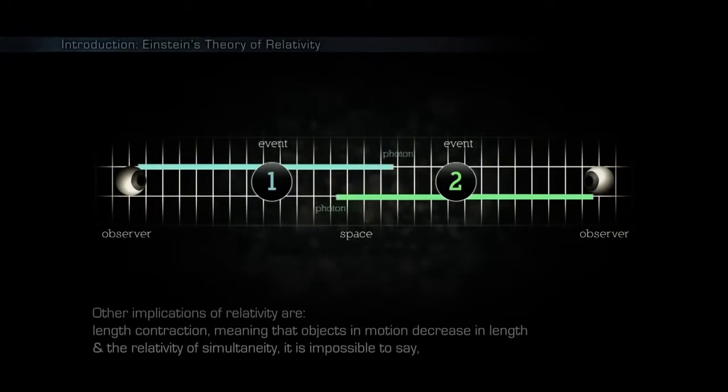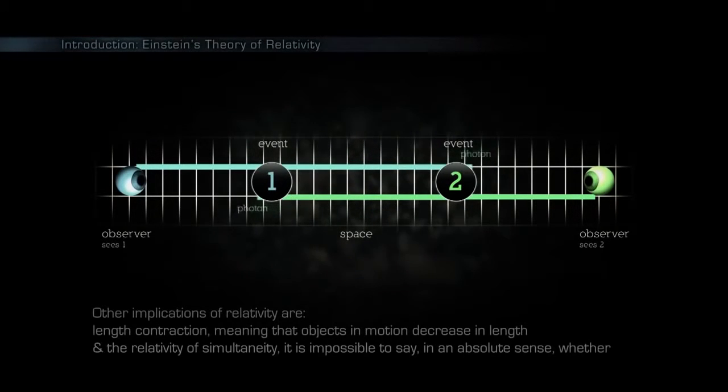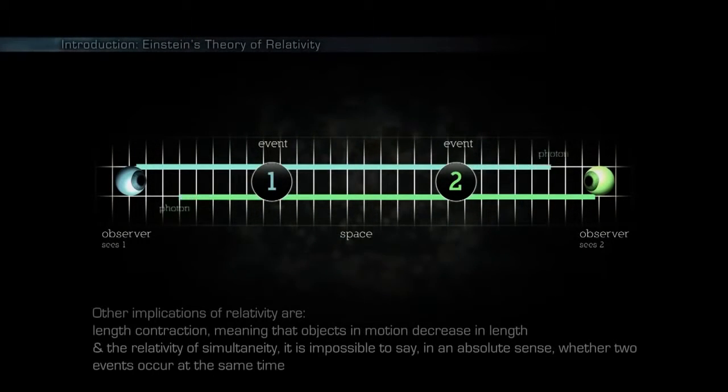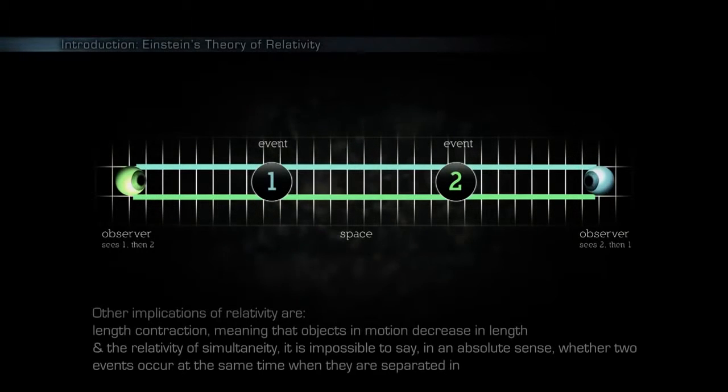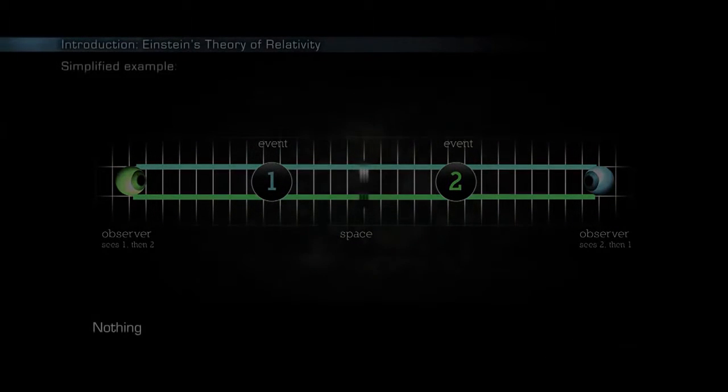It is impossible to say in an absolute sense whether two events occur at the same time when they are separated in space. Nothing can travel faster than the speed of light.